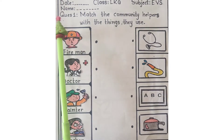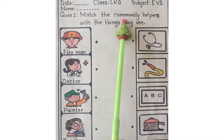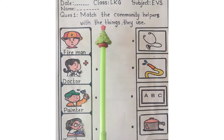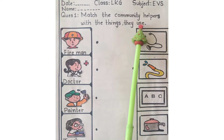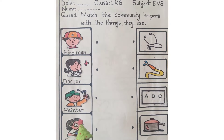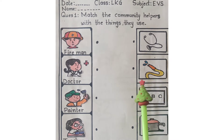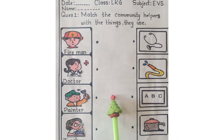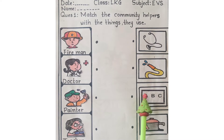Let's read the question first. Match the community helpers with the things they use. On the left side, I have drawn the pictures of community helpers and on the right side, I have drawn the pictures of things they use. Children, you need to think wisely and match the community helper with his or her correct tool to make their work easier.